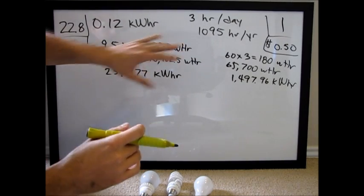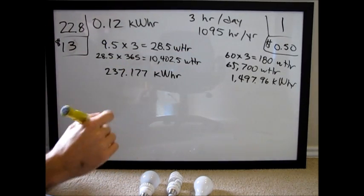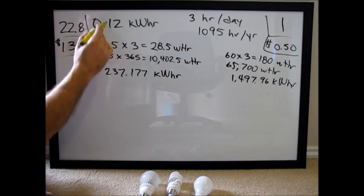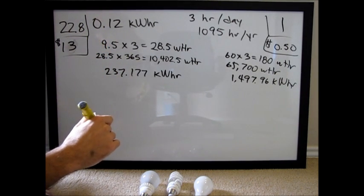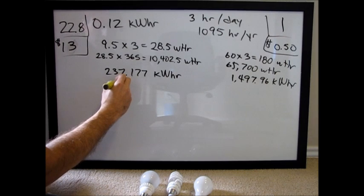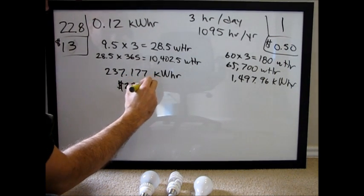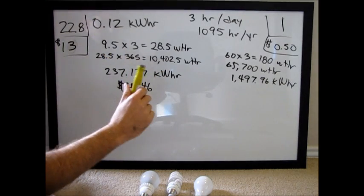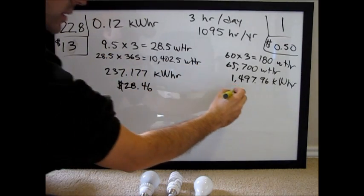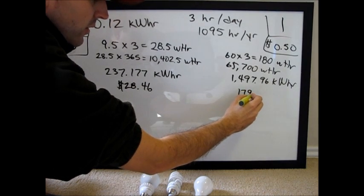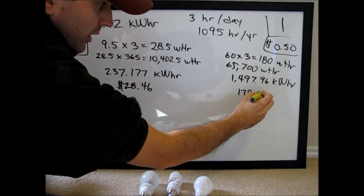And now, to finish the comparison, we need to figure out the cost of the electricity. So we multiply both of these by 0.12. This one ends up being $28.46 for the 22.8 years. This one ends up being $179.76.